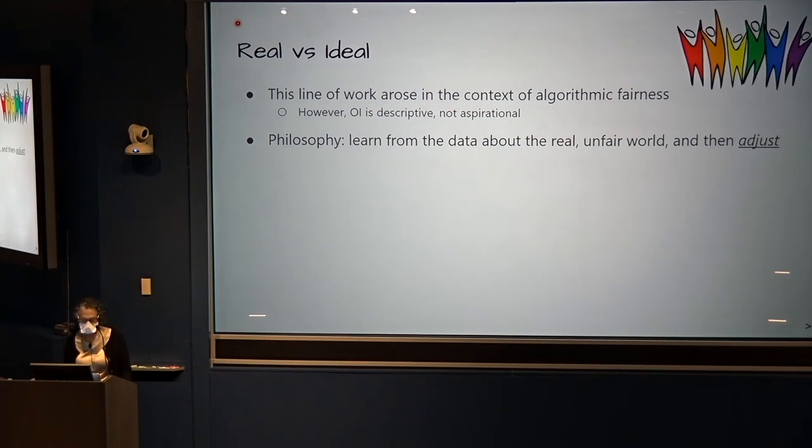The very last couple of minutes. This line of work on outcome indistinguishability arose in the context of algorithmic fairness. Coming back to your question, outcome indistinguishability is descriptive. It's not aspirational. It's telling you about the world as it is, and that is the world that's reflected in the data. If the data have bias in them, then the algorithms that are trained on those data will imbibe those biases. From a fairness perspective, what we would hope for is that we would learn from the data about the real and unfair world as much as we possibly can, and then try to adjust.